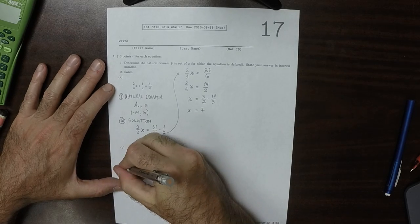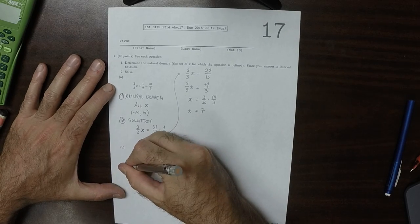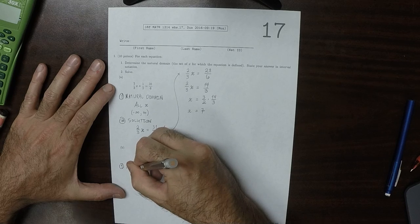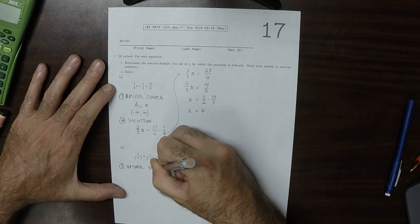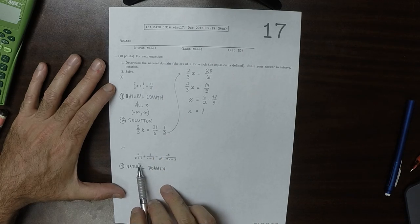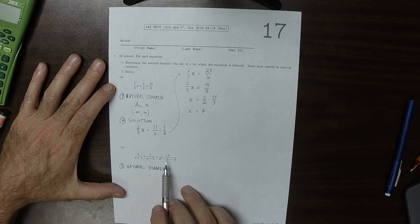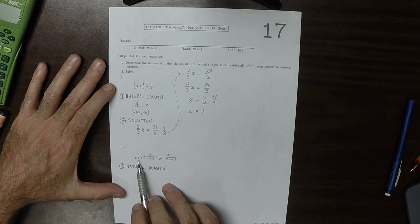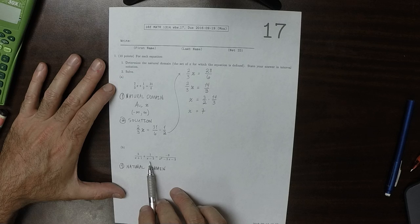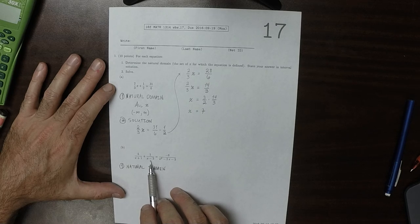Okay, so part b, the natural domain. So we can already see that you cannot evaluate this equation at negative 1 because this term would have a division by 0. And you cannot evaluate at 3 because this term would have a division by 0.